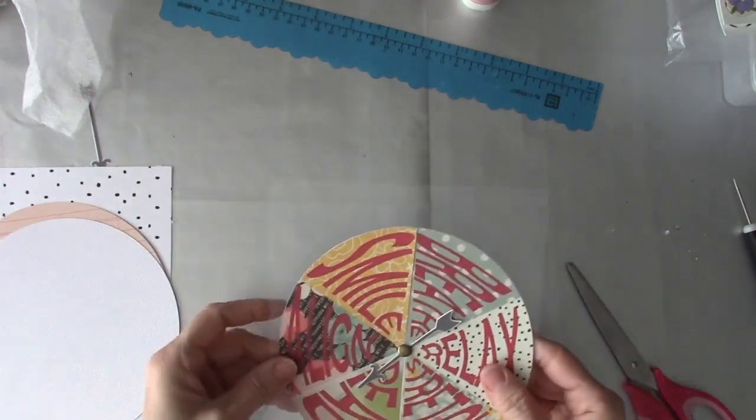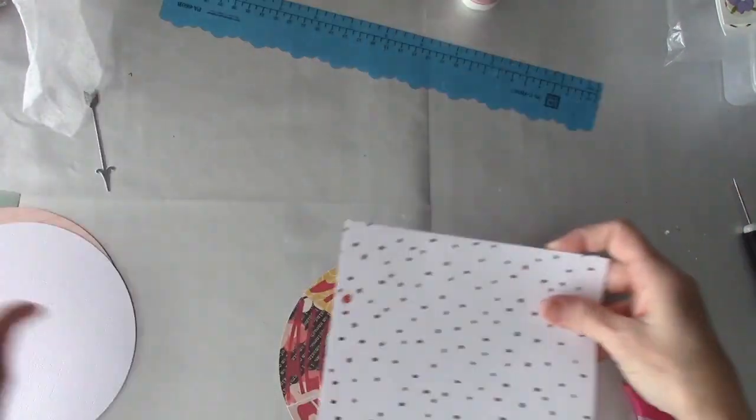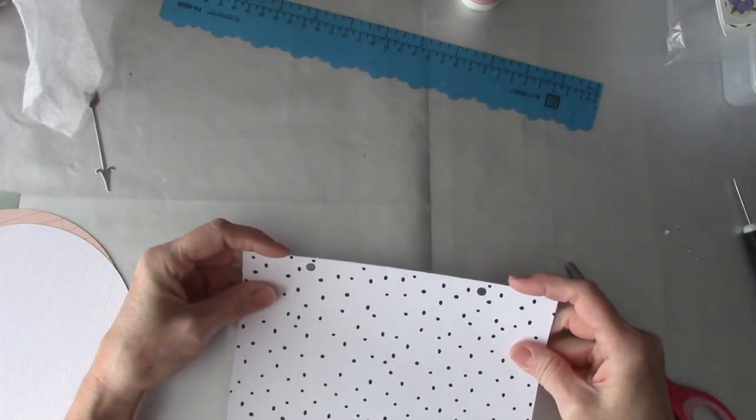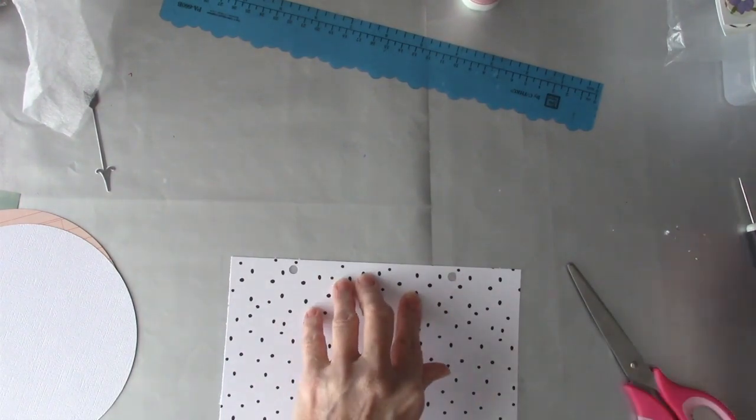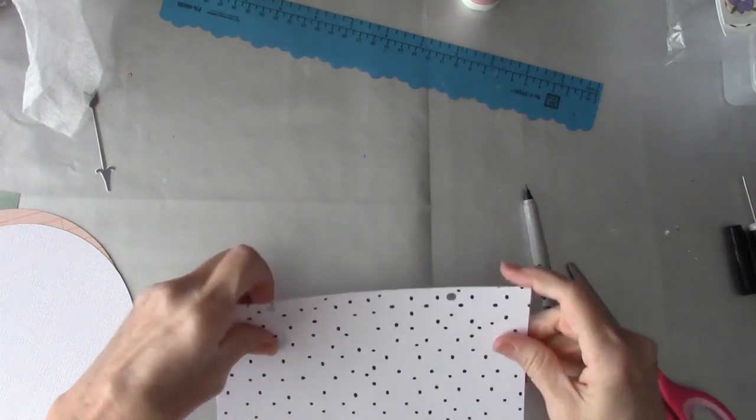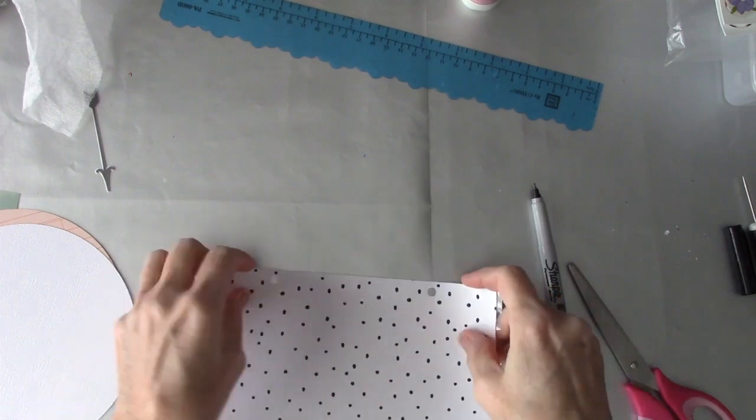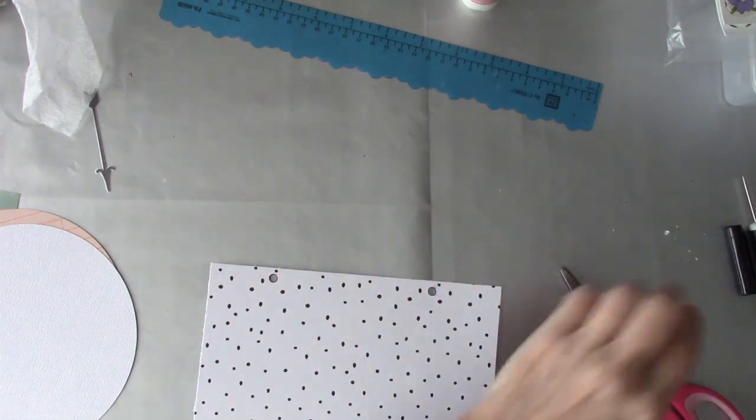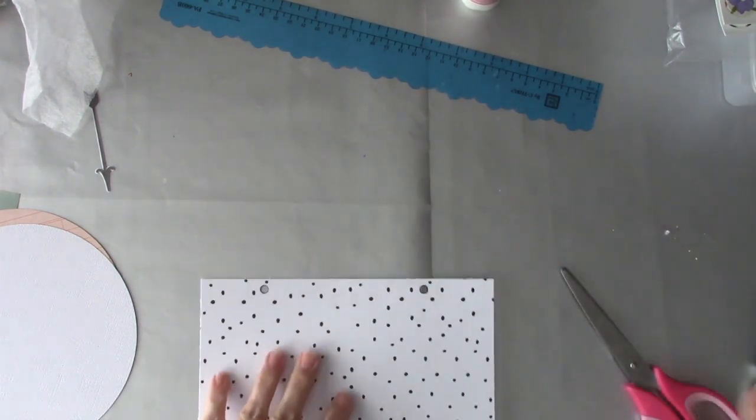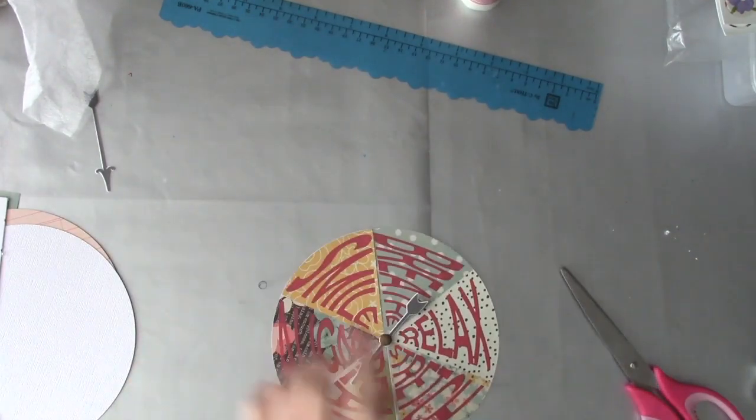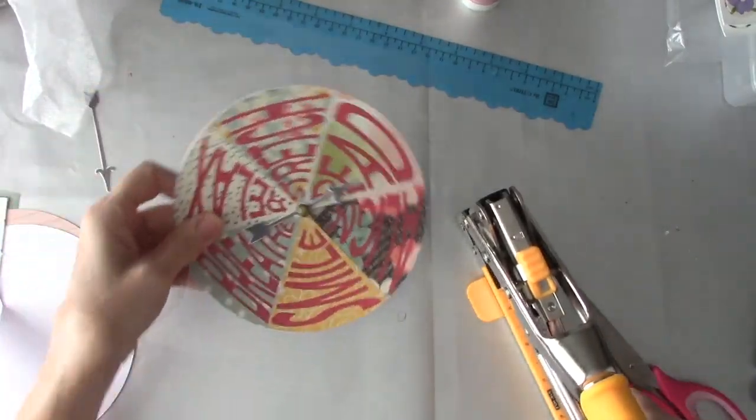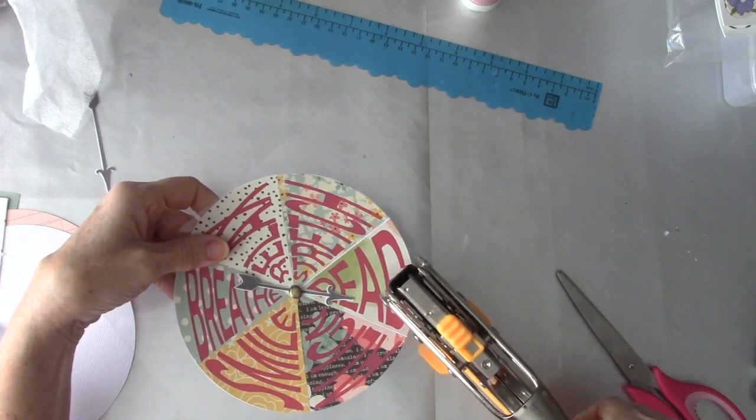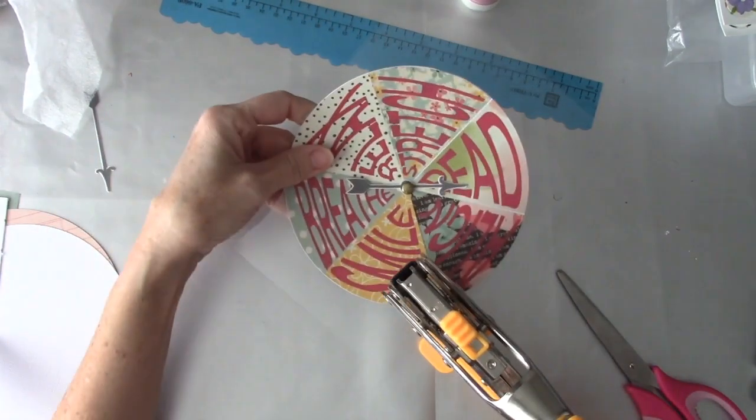And so now I think I'll punch the holes. So this is a little bit longer than this page protector page divider. I'll just mark where those holes need to go and not worry about the paper. That's pretty much the same size, cool.